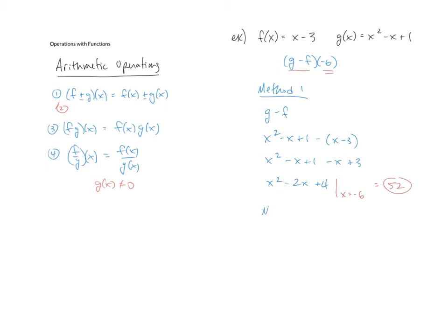Method two now, this is where we're going to take g of negative six minus f of negative six. So g of negative six says go find function g every place you see an x put a negative six. g of negative six ends up being a positive 43.